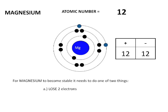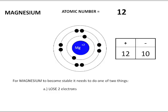It is most energetically favorable to lose two electrons — so bye-bye to those two valence electrons. Now our proton to electron count is no longer 12 protons and 12 electrons. It is 12 protons and 10 electrons, which means magnesium is no longer neutral. Magnesium has a surplus of two protons — a difference of two extra positives.